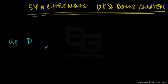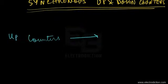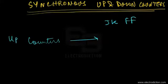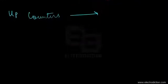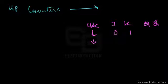This is the up counter, which I'm going to show you. We're going to construct the counters using JK flip-flops. The truth table of a JK flip-flop has J and K inputs, and Q and Q-bar outputs. We'll consider negative edge triggered JK flip-flops, so if J is zero and K is one...